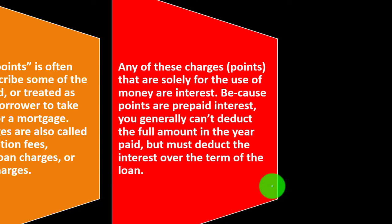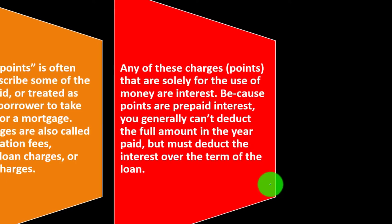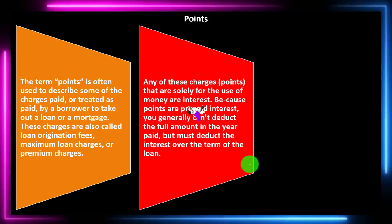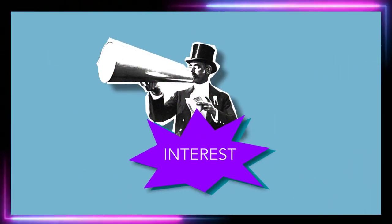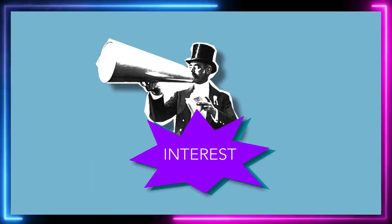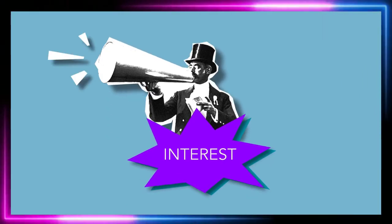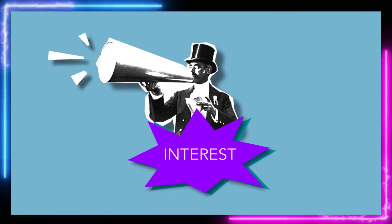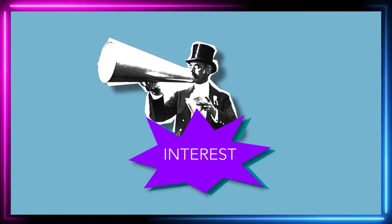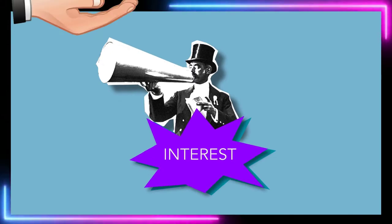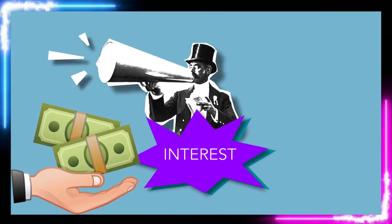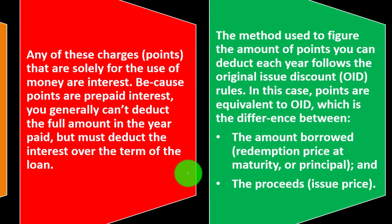Because points are prepaid interest, you generally can't deduct the full amount in the year paid, but must deduct the interest over the term of the loan. If we have prepaid interest, that's kind of like prepaid rent — we paid for the interest before we actually used the money. So you have to allocate it over the life of the loan. The method used to figure the amount of points you can deduct each year follows the original issue discount (OID) rules.